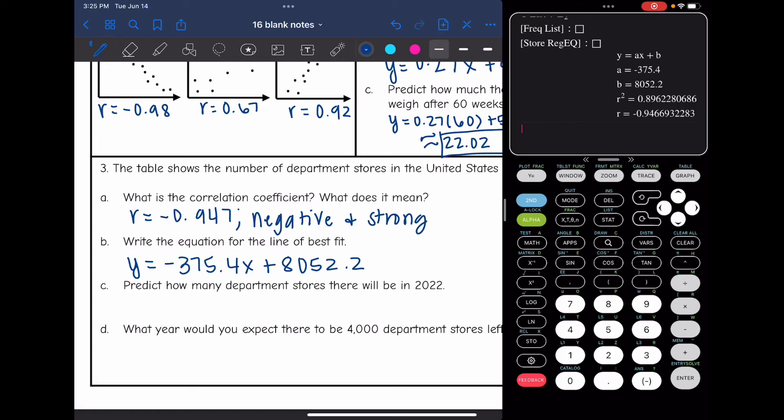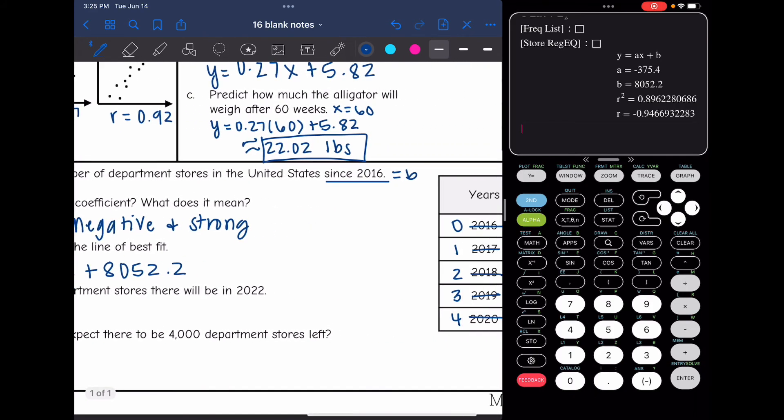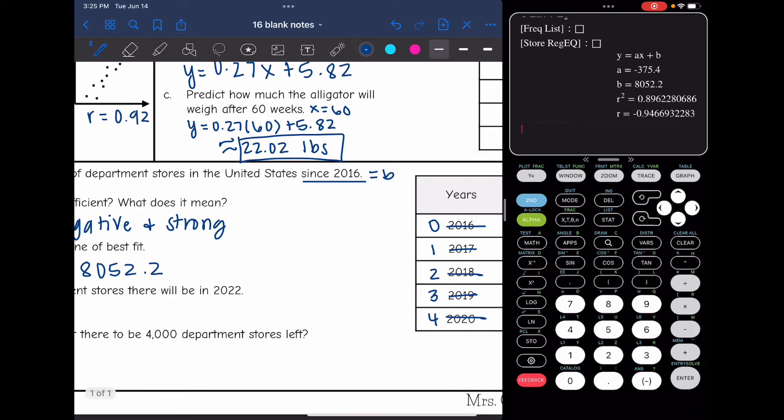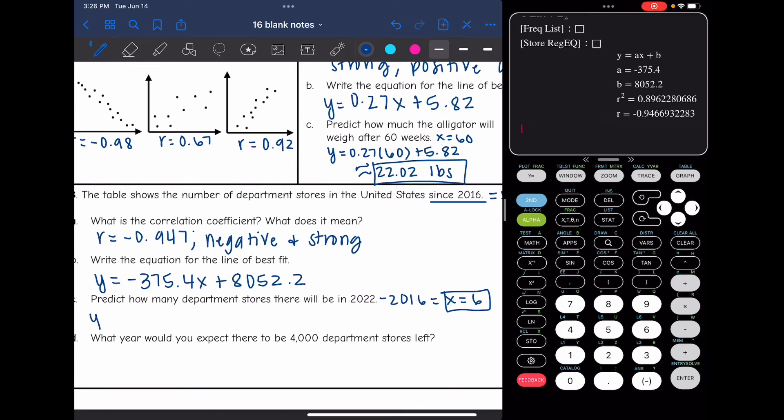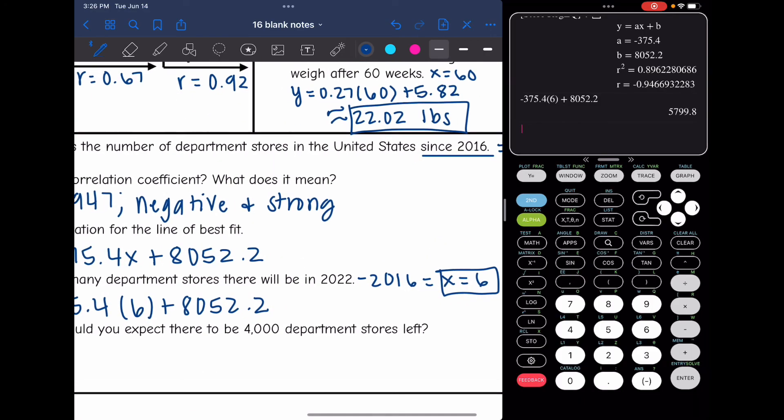And then it says predict how many department stores there will be in 2022. 2022 is six years after 2016, which is what we started at. So we would substitute in x equals 6 into our linear regression equation. So I'm going to do that. y will equal negative 375.4 times 6 plus 8,052.2. So negative 375.4 times 6 plus 8,052.2.